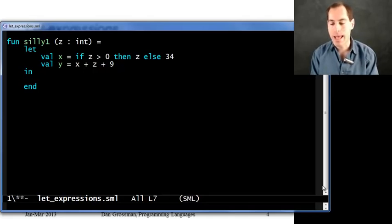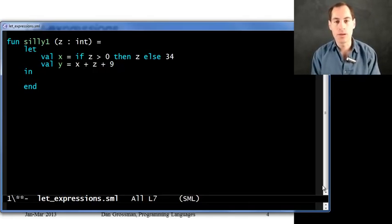When we evaluate this, we'll evaluate x to the result of if z greater than zero, then z else 34. Then we'll evaluate y to be x plus z plus nine.